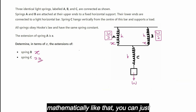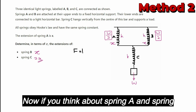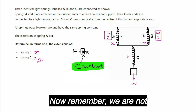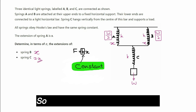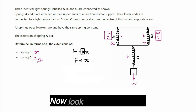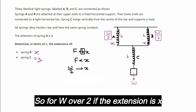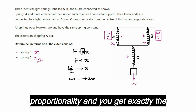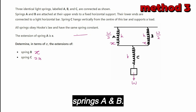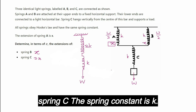Although that's the mathematical approach, you can also use simple proportionality. Springs A and C have the same spring constant k, so F is proportional to x. Spring A has force W/2 and extension x; spring C has force W — double the force — so the extension must be 2x. A third approach: treat A and B as a parallel combination with spring constant 2k, and spring C alone has spring constant k.